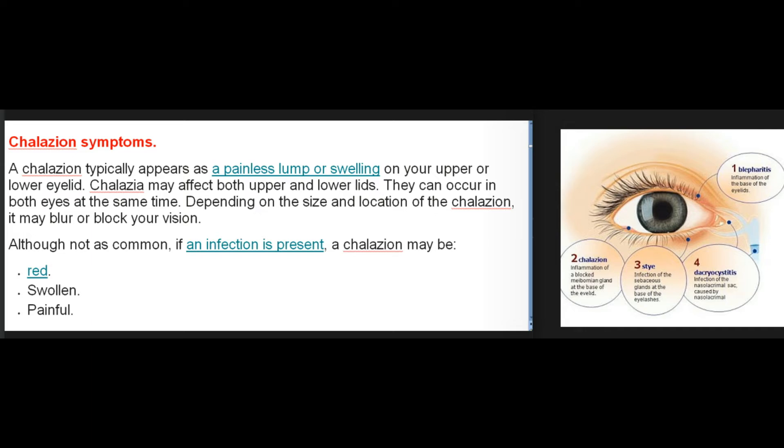Chalazion symptoms: A chalazion typically appears as a painless lump or swelling on your upper or lower eyelid. Chalazia may affect both upper and lower lids and can occur in both eyes at the same time. Depending on the size and location, a chalazion may blur or block your vision. Although not as common, if an infection is present, a chalazion may be red, swollen, and painful.